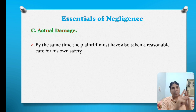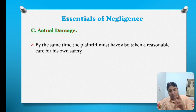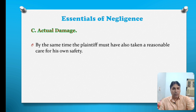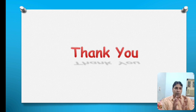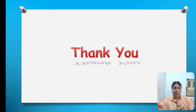So these are the three essentials of the tort of negligence. The first one is the defendant must have a duty to take care. The second one is he must commit a breach in such a duty to take care. And the third one is actual damage must be caused to any person. I hope you understand this topic. If you understand this topic, please subscribe my channel, hit the notification button, hit the like button, and share this video with your friends. Thank you very much.